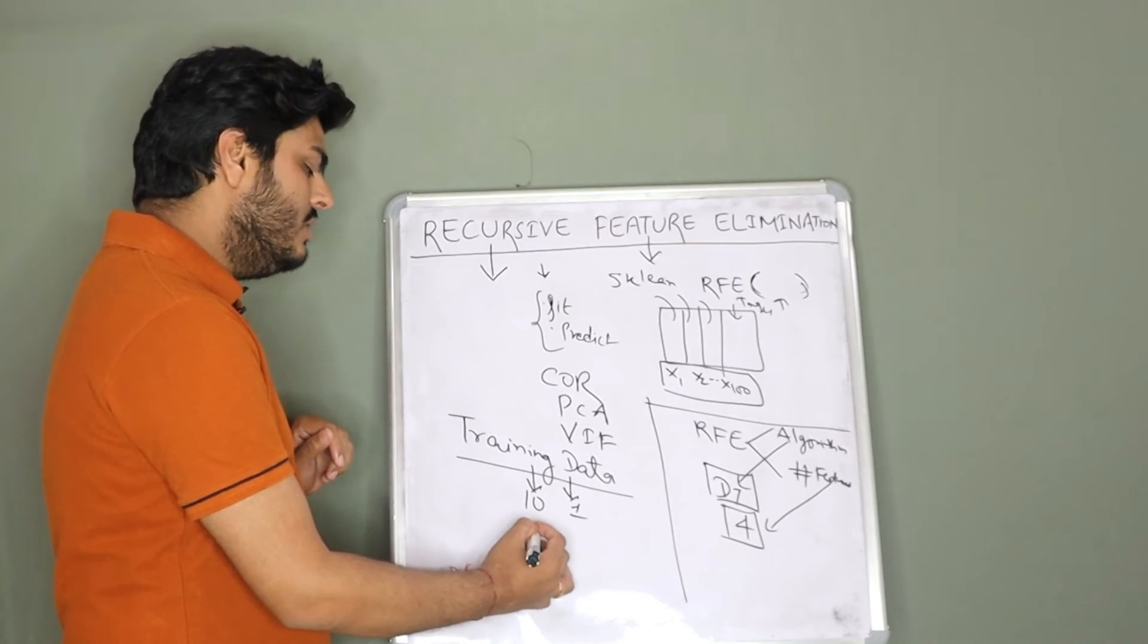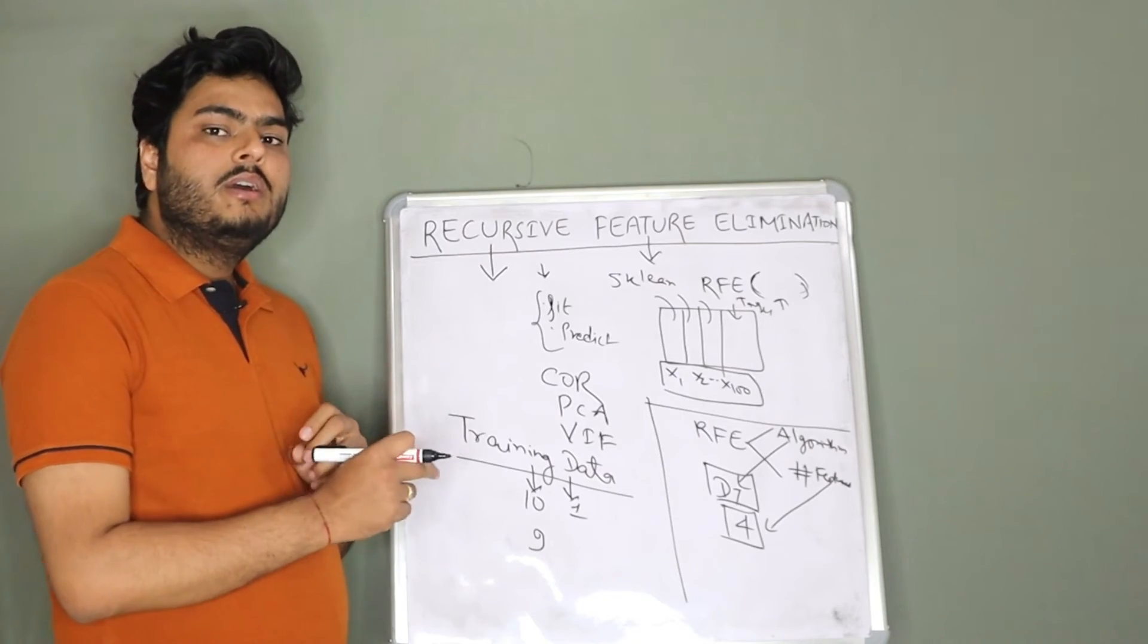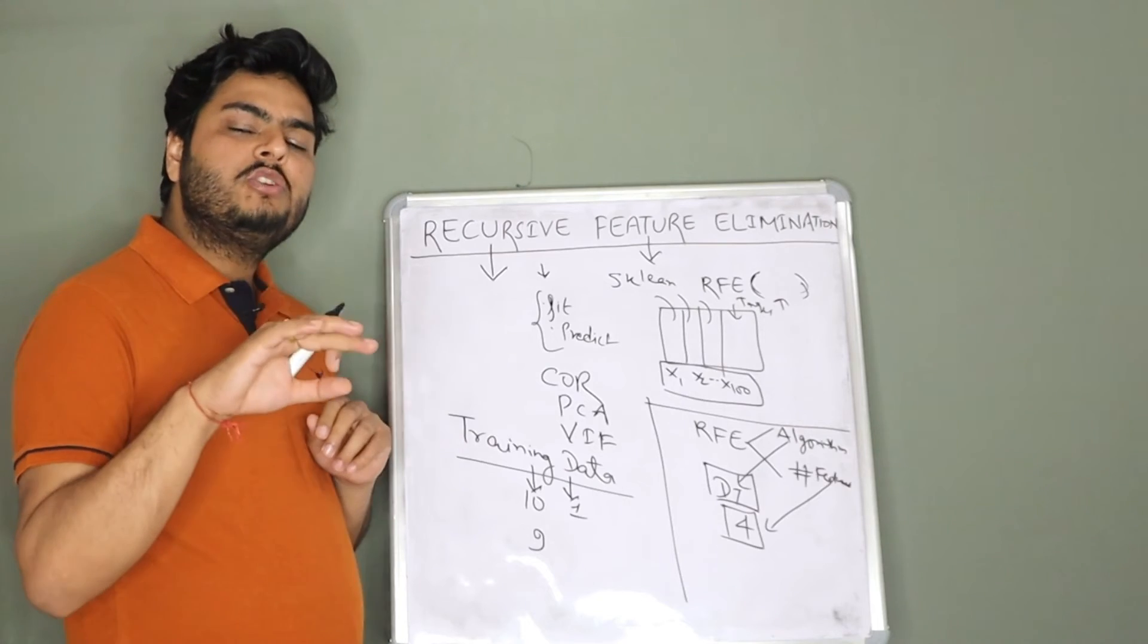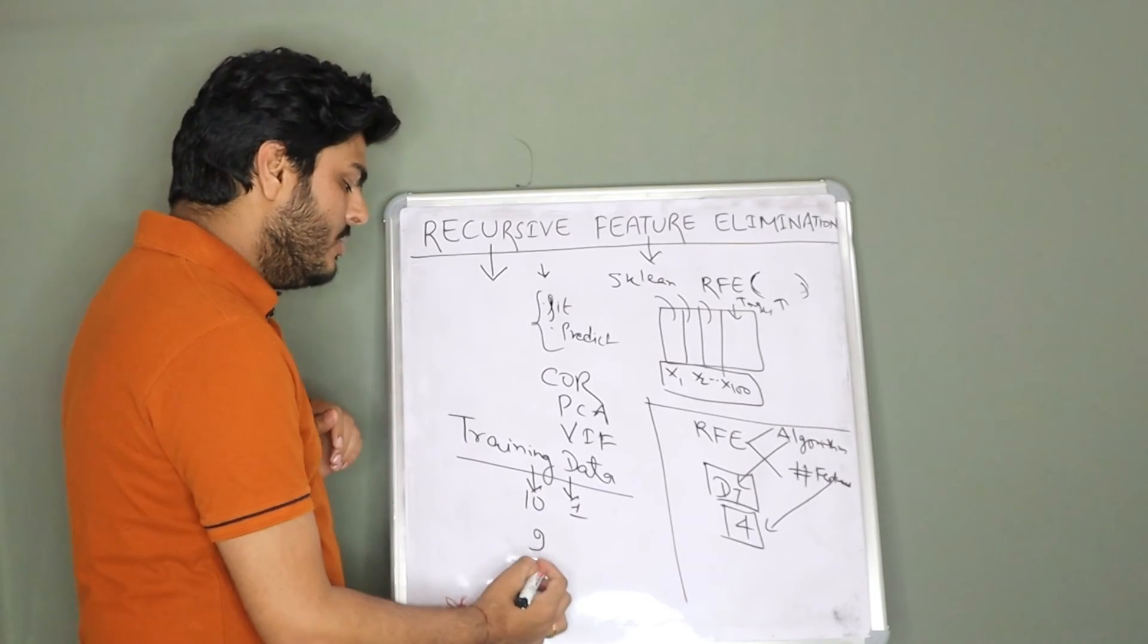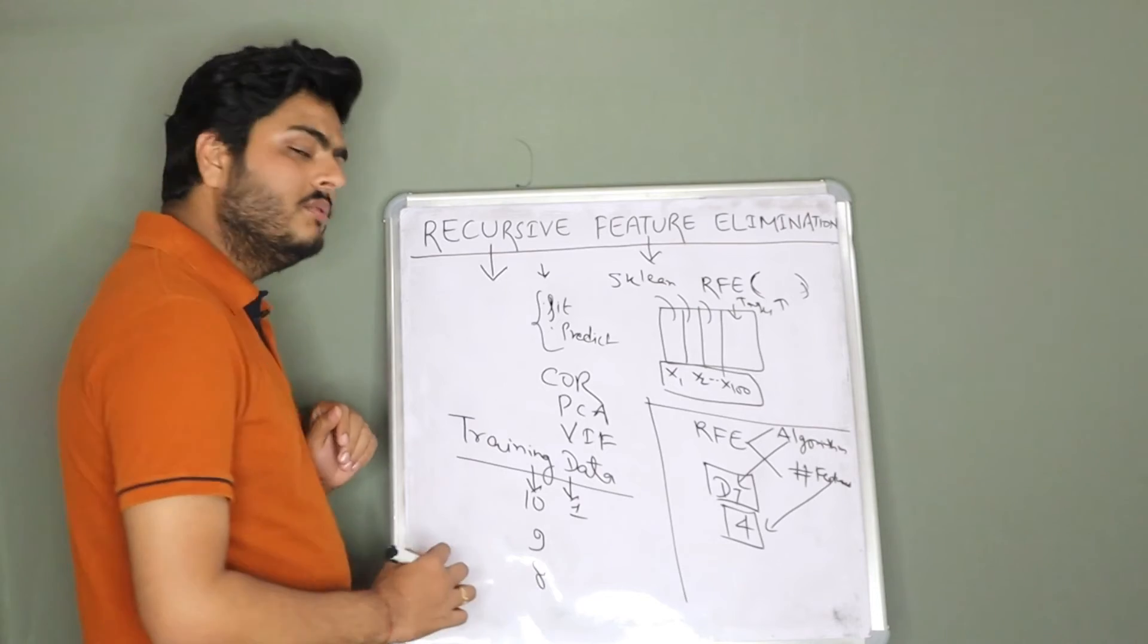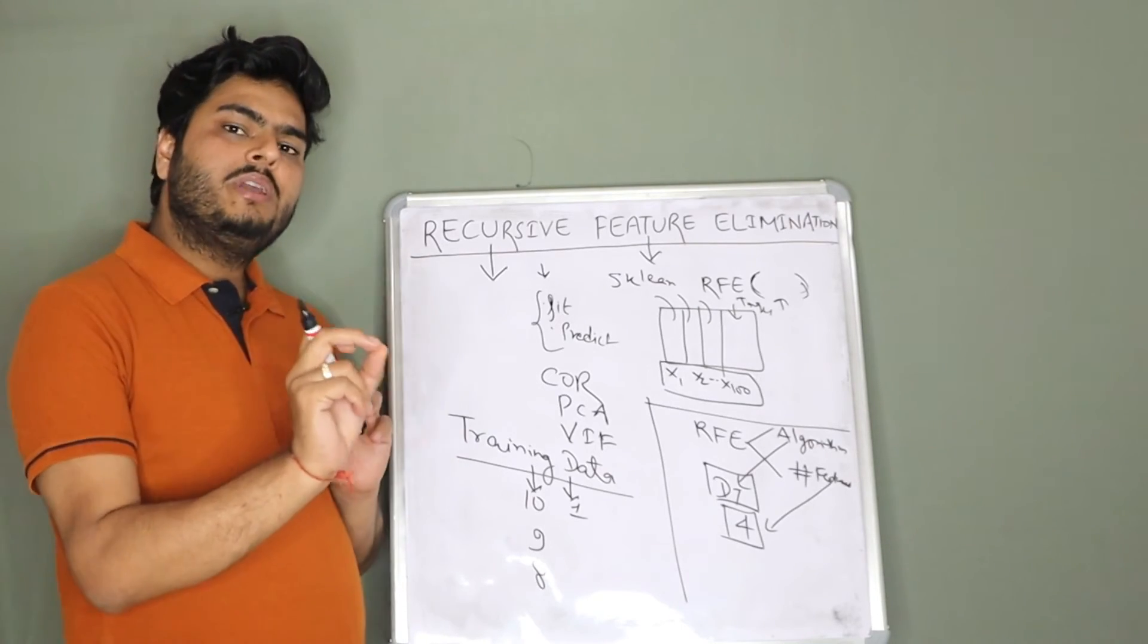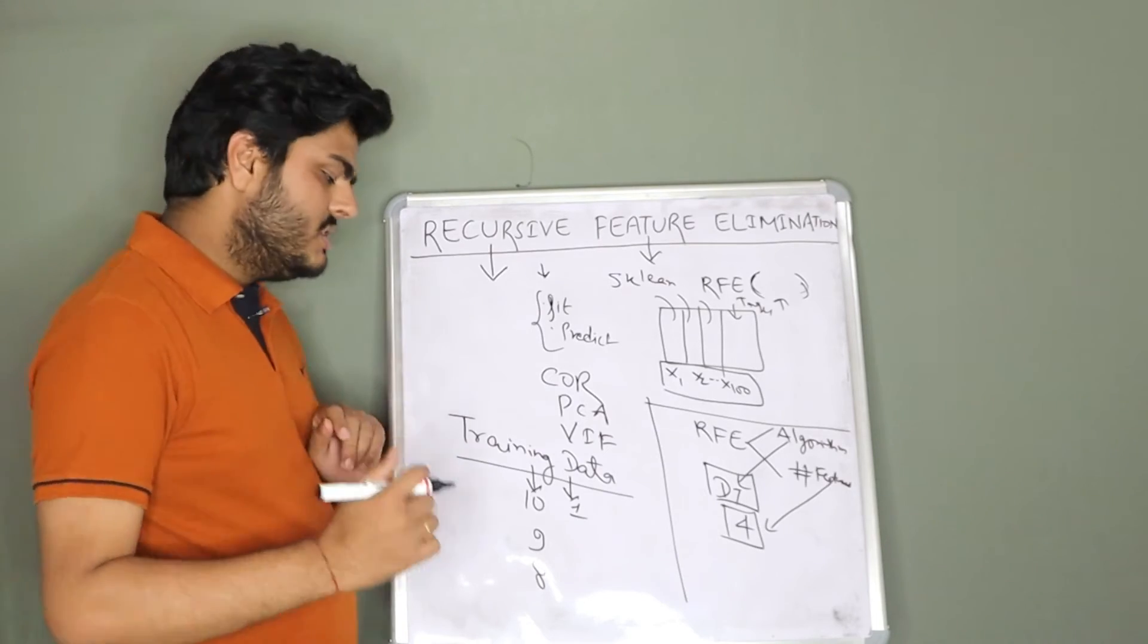And in the next iteration, the feature importance will again be calculated and least important one feature will be removed. Next iteration, model will run on 8 features which are left. Feature importance will again be calculated. One least important feature will be taken out.